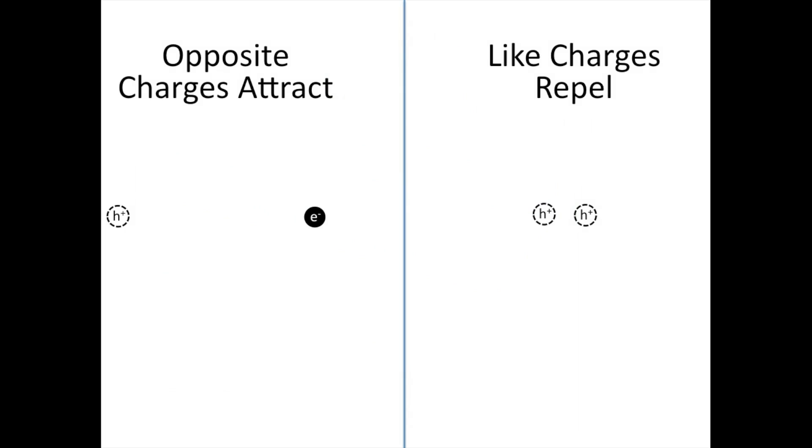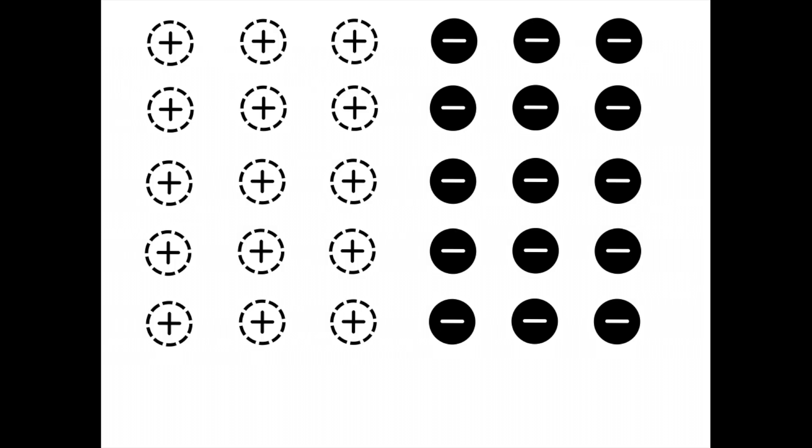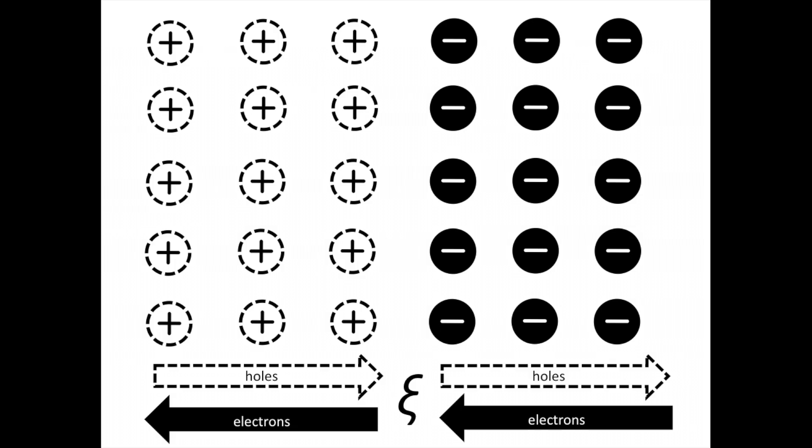An electric field is created when positive and negative charges are separated. As you know, opposite charges attract and like charges repel. We'll exploit this property by creating a sheet of positive charges on the left and negative charges on the right, thus producing an electric field, which we denote with the Greek letter Z.